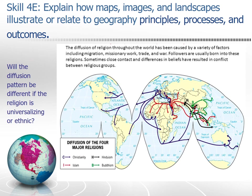Here's another example for 4E: the diffusion of religion throughout the world, caused by a variety of factors including migration, missionary work, trade, and war. Followers are usually born into these religions, and sometimes close contact and differences in beliefs have resulted in conflict between religious groups. The diffusion pattern will be different depending on whether the religion is universalizing or ethnic — one of the variations of questions asked on this year's edited AP exam related to universalizing and ethnic religions, and ethno-nationalism related to religion.